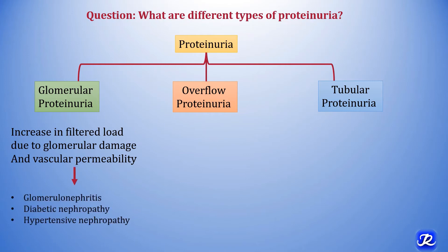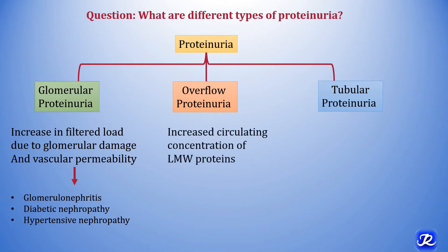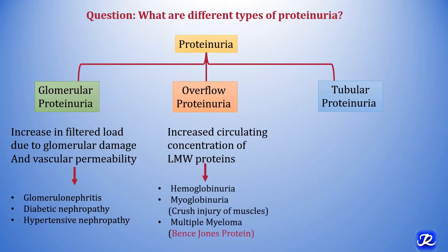The causes of glomerular proteinuria are glomerulonephritis, diabetic nephropathy, and hypertensive nephropathy. The second type is overflow proteinuria: there is increased concentration of protein in blood, and as these are low molecular weight proteins they start appearing in the urine — for example, hemoglobinuria, myoglobinuria in crush injury of muscle, and in multiple myeloma, Bence Jones proteins are excreted in the urine.